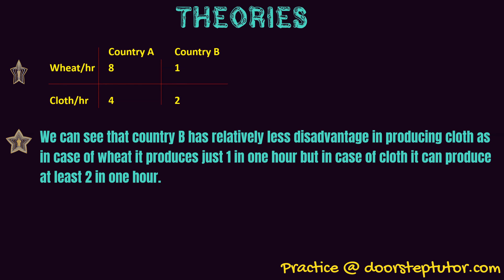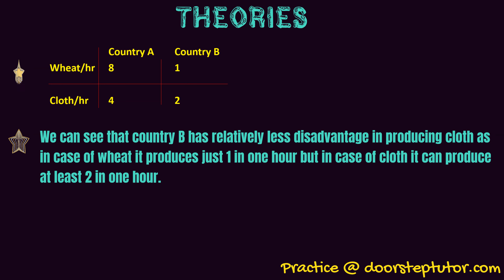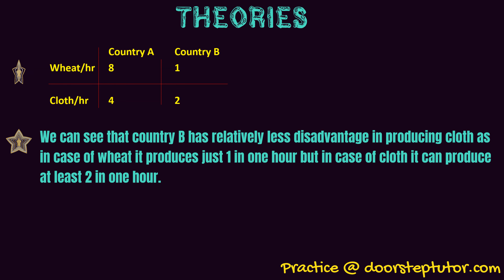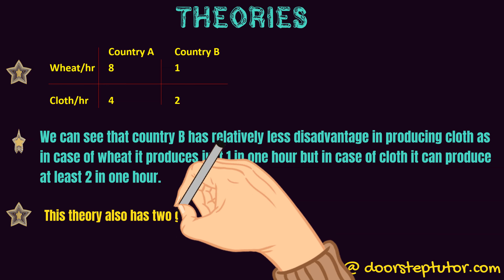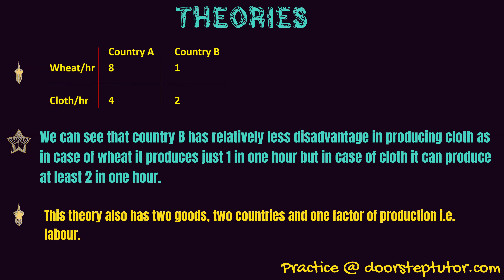We look at which good has the lower absolute disadvantage. Subtracting: for cloth it is 4 minus 2 equals 2, and for wheat it is 8 minus 1 equals 7. Since 2 is the lesser difference, country B — India — has relatively less disadvantage in cloth and should therefore produce cloth. This theory is also based on two goods, two countries, and one factor of production — labor.